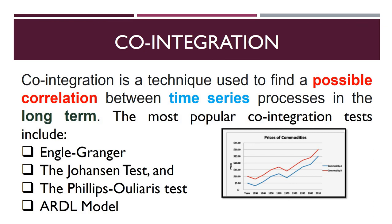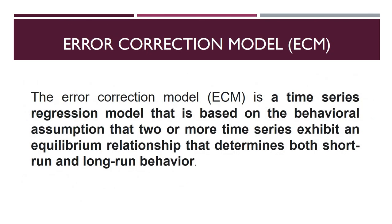The Error Correction Model (ECM) is a time series regression model based on the assumption that two or more time series exhibit an equilibrium relationship that determines both short-run and long-run behavior. ECM integrates short-run dynamics with long-run equilibrium without losing long-run information, and avoids spurious relationships that result from applying OLS on non-stationary data. Once co-integration is confirmed, the ECM is applied.